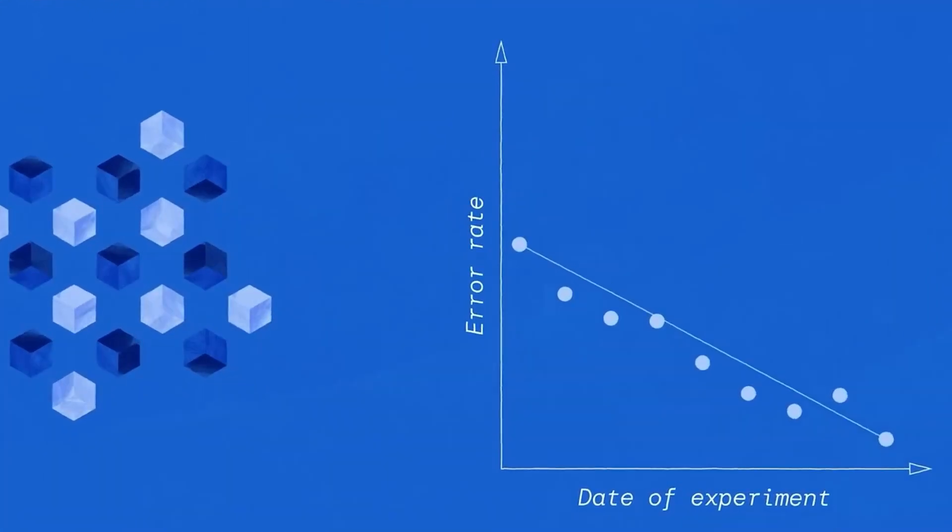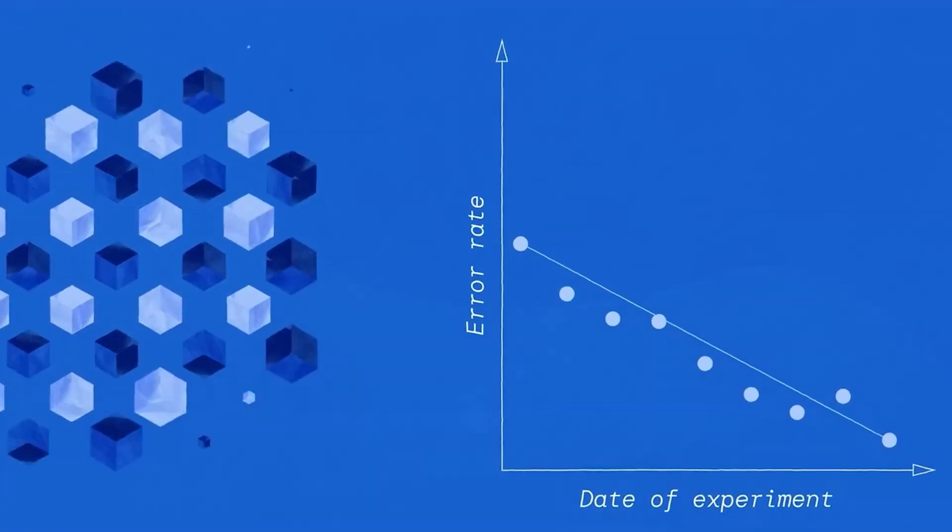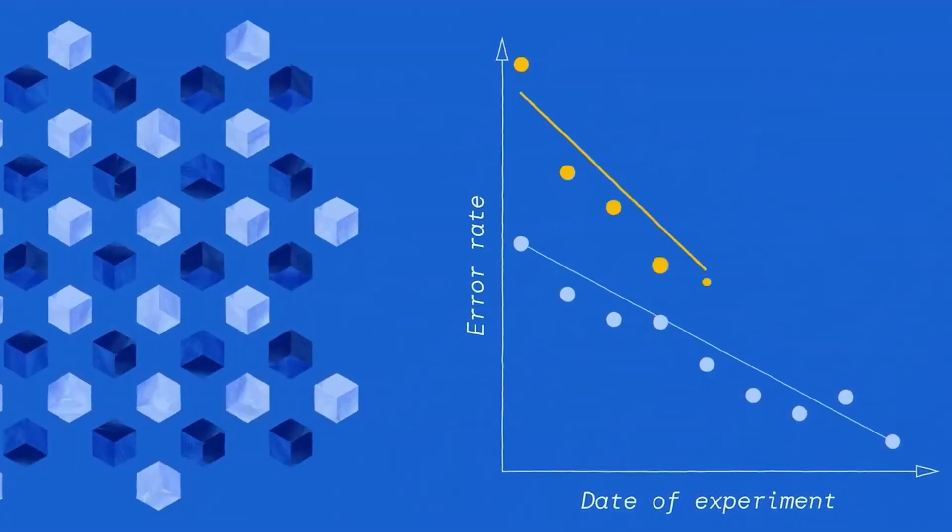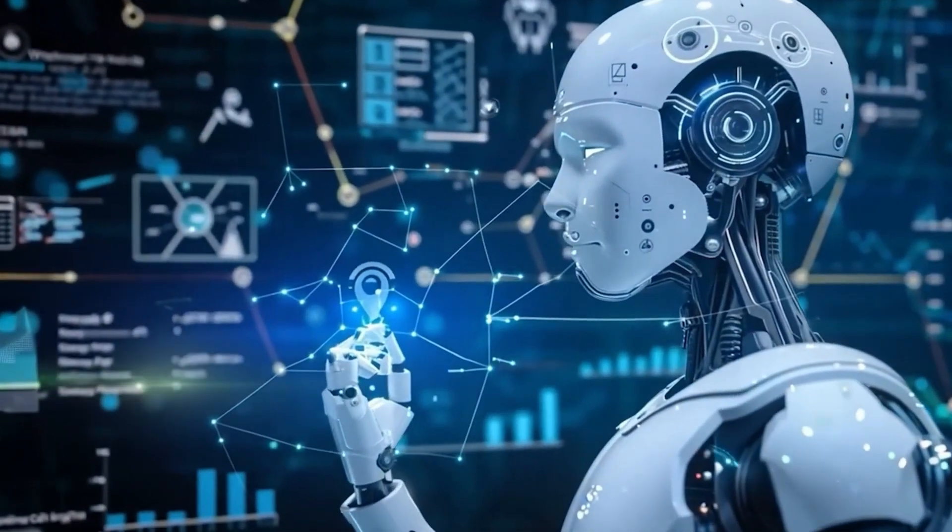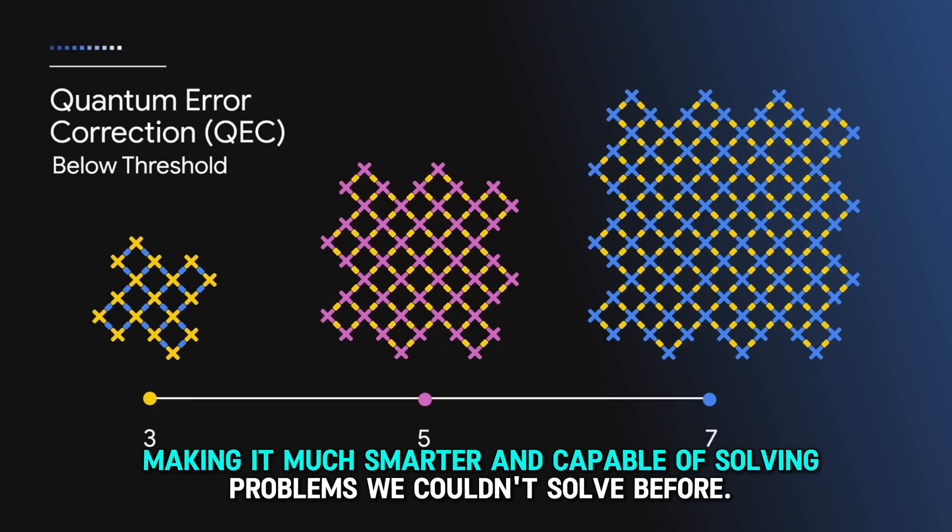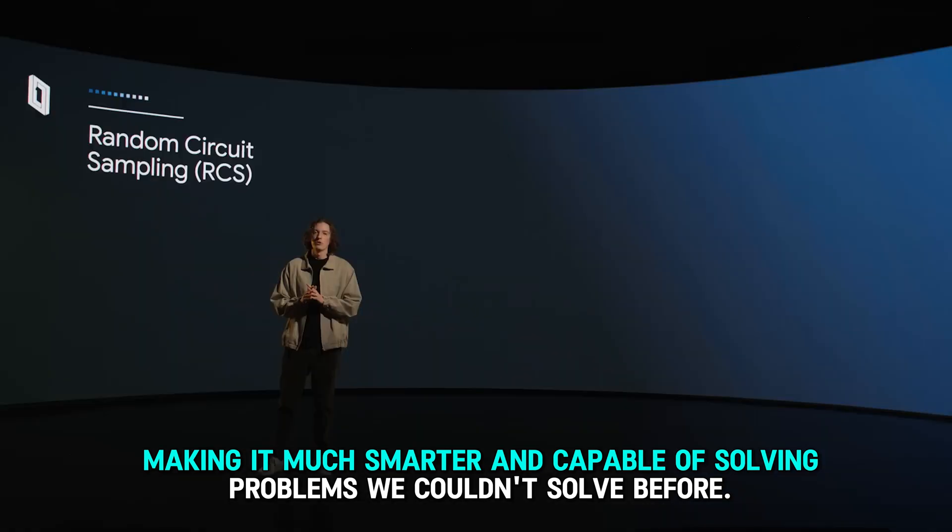With this new chip, quantum computers can now process data much faster and handle really complex tasks that used to be too difficult. This could change how AI works, making it much smarter and capable of solving problems we couldn't solve before.